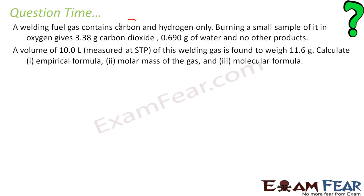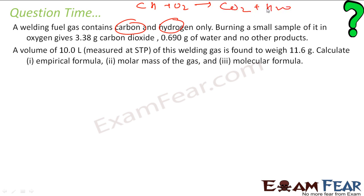Welding fuel contains carbon and hydrogen only. Burning a small sample of it with oxygen gives carbon dioxide and water. You get 3.38 grams of carbon dioxide and 0.690 grams of water and no other component. A volume of 10 liters under standard temperature and pressure of welding gas is found to weigh 11.6 grams. We have to find the empirical formula, molar mass, and molecular formula of this gas.